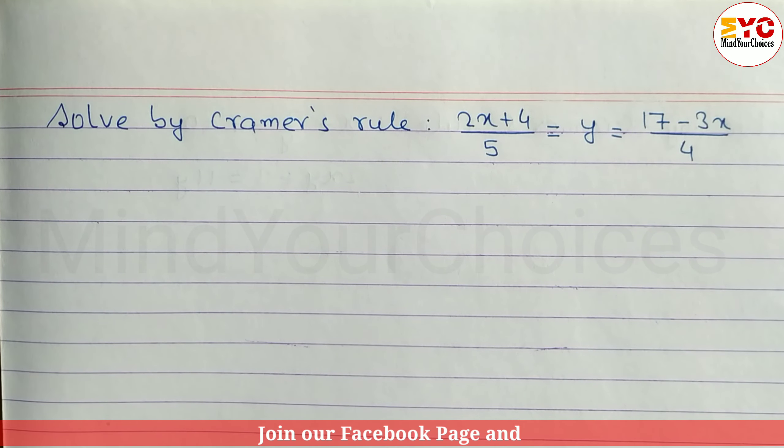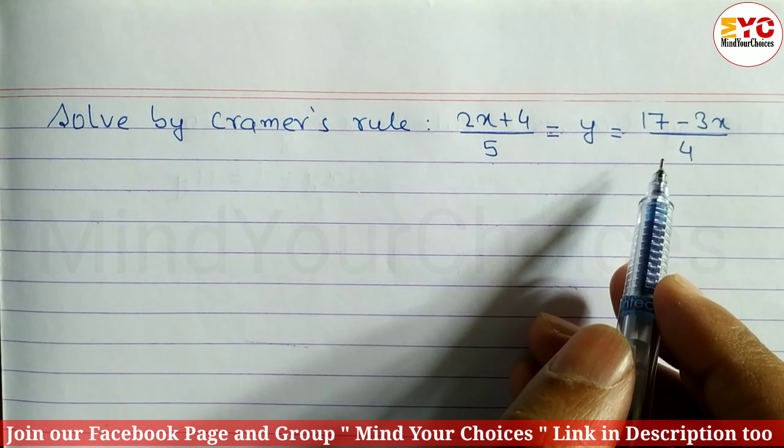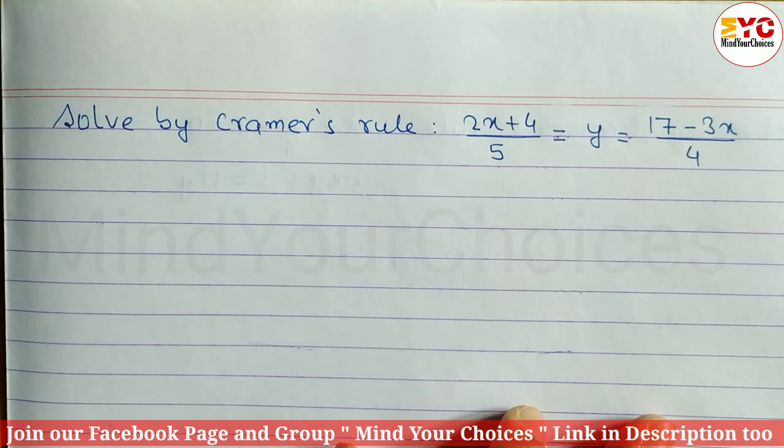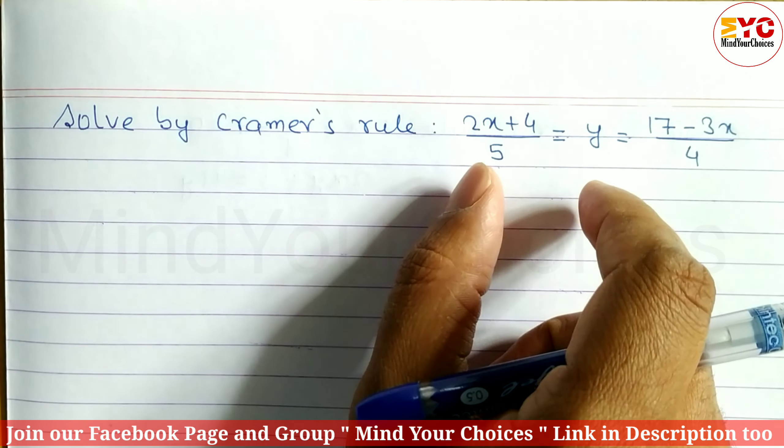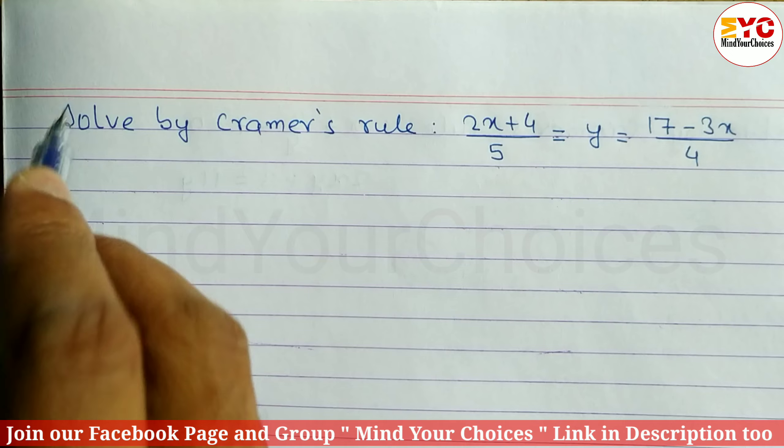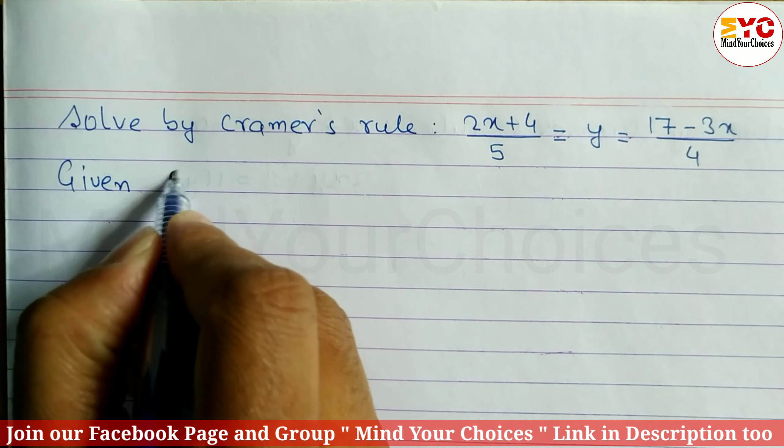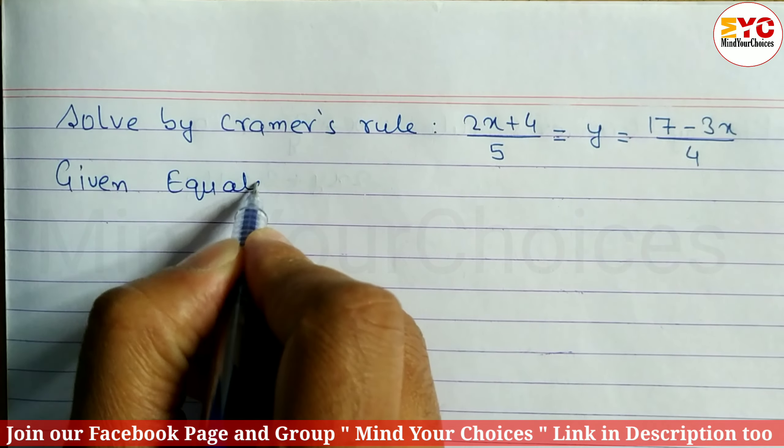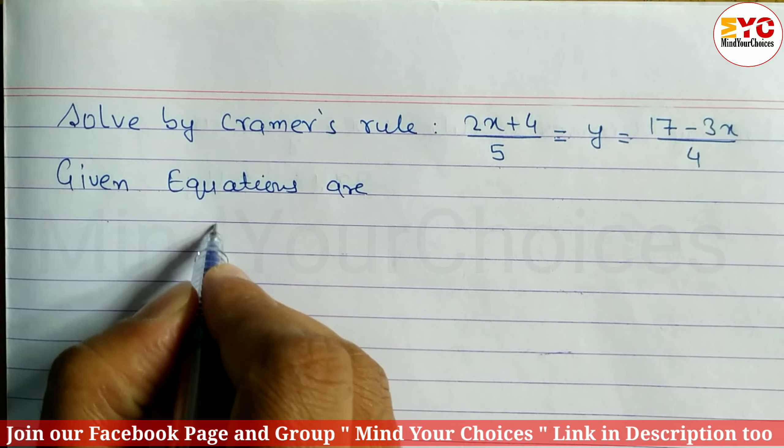Your question is from class 10 optional math model questions. Here the question is to solve by Cramer's rule. You have two equations to look at properly. First of all, we have to take the first and second equations. The given equations are, so we can write here: